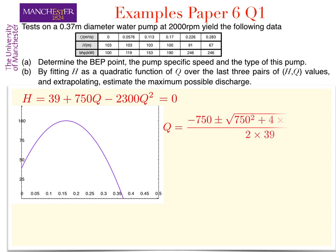The general solution for a quadratic is minus b plus or minus the square root of b squared minus 4ac all over 2a.